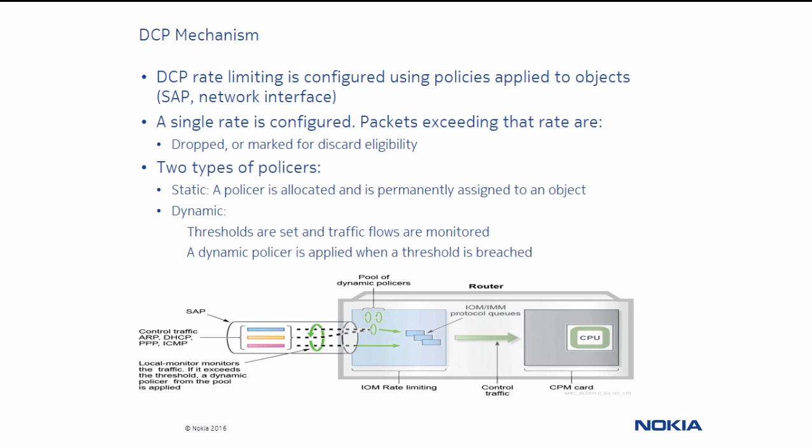Just like CPU protection, distributed CPU protection is configured using policies and applied to a SAP or network interface. Packets exceeding the rates are dropped or marked as discard eligible. There are two types of policers: static, where it is permanently assigned, or dynamic, where it is only applied after threshold values are reached. When a dynamic policer is applied, a local monitor monitors the overall traffic rate on a SAP. Once that traffic rate exceeds the local monitoring threshold, a dynamic policer is applied to the interface from a pool. The dynamic policer can then rate limit traffic on a per-protocol basis.